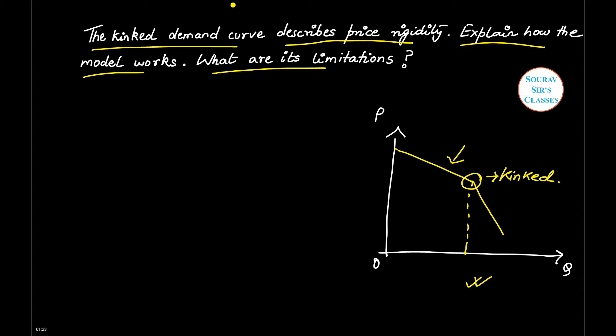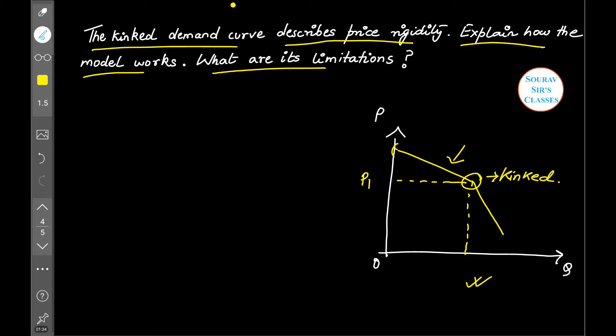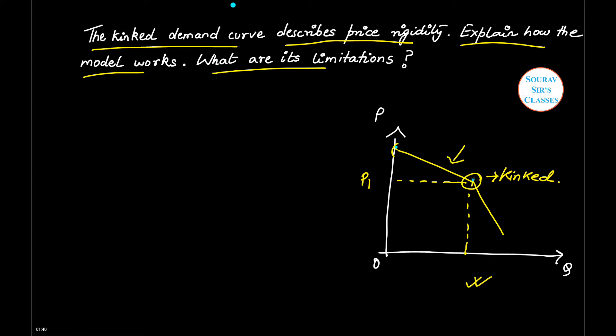Now let us see what we can understand from this image at a glance. We can see above this price level, say P1, the curve from this part to this part is very much flat. While if I consider the demand curve below the P1 level, it is relatively steeper. So we can see that above P1 level, the demand curve is flatter, relatively flatter.